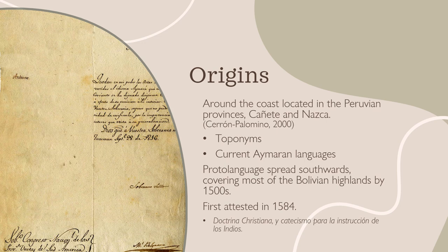Based on both phonemes and the location of surviving Aymaran languages, the language appears to have originated around the coast in the Peruvian provinces of Canet and Nazca. The proto-language appears to have rapidly spread southwards, covering most of the Bolivian highlands by the 1500s. The earliest recording of Aymara can be found in a document published in Lima, Peru in 1584.